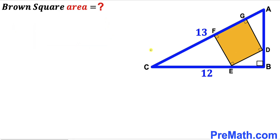Let's get started. Let's focus on the brown shaded square DEFG and label its side length as X, since all sides are equal. So each side is going to be X across the board.